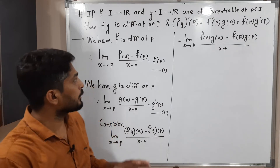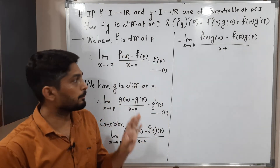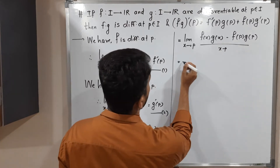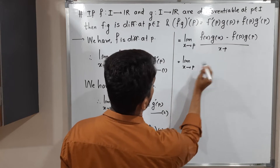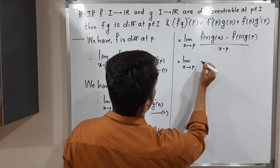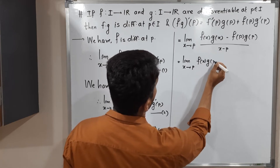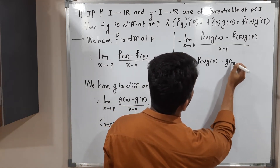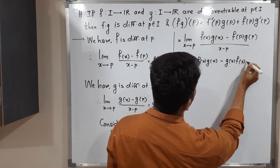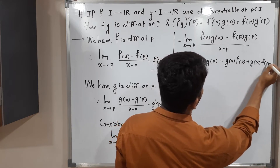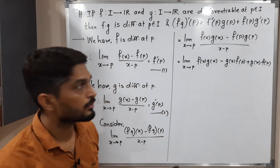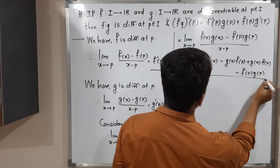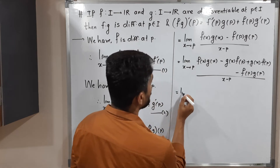We adjust by adding and subtracting the same term g(x)·f(p). So we write: limit x tends to p of [f(x)·g(x) minus g(x)·f(p) plus g(x)·f(p) minus f(p)·g(p)] divided by [x minus p]. If you cancel the added and subtracted terms, you recover the original expression.